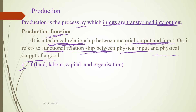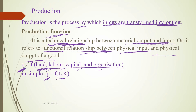The quantity of output is a function of the four factors of production. Factors of production are land, labor, capital, and organization. In a simple formula, quantity is a function of labor and capital — other things are assumed constant. L stands for labor and K is capital — these are the two factors of production we consider.